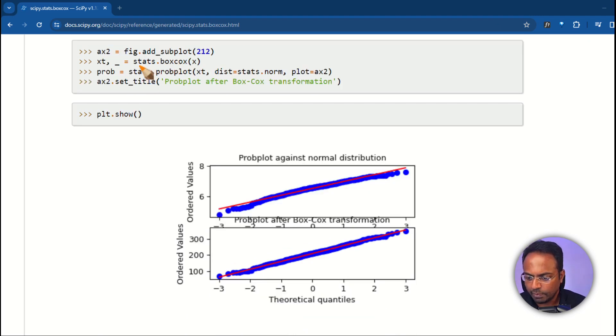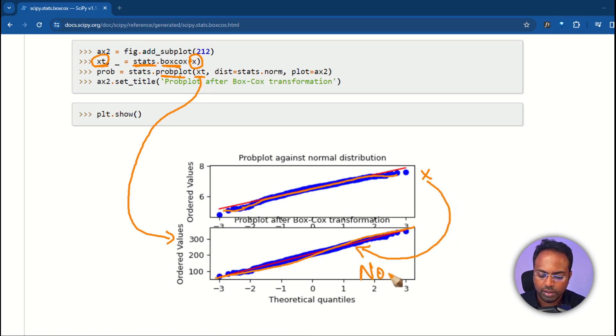And in the next step, we are applying stats.boxcox on x. We are getting a new variable xd. This, we are plotting using probplot. This is the plot that you have over here. Look at this. Compare the blue dots following this kind of a shape, it's slightly deviating away from the red line. But in the second plot, this is closer, more closer and lying on top of the red line itself. This is successful in making the original x follow more closely towards a normal distribution.